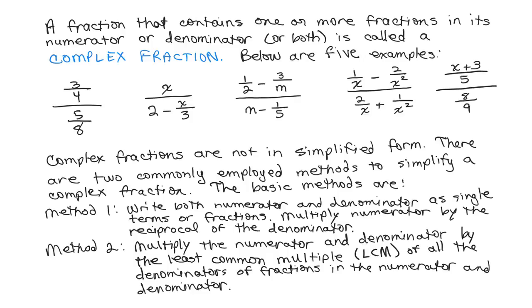If you look at the fourth example, one over x minus two over x-squared in the numerator, there are two fractions in that numerator separated by a subtraction sign, so that's not a single fraction.